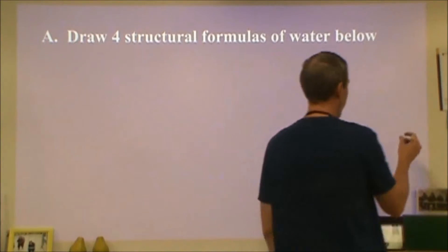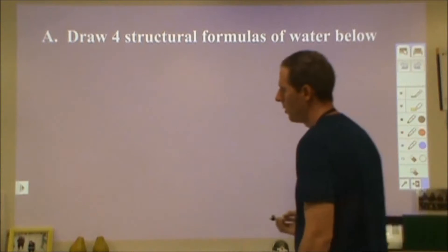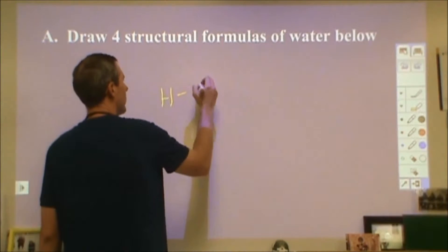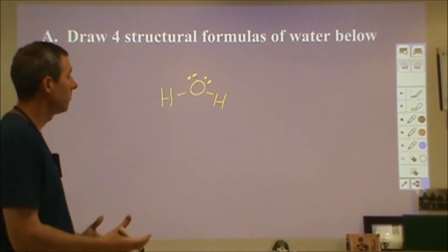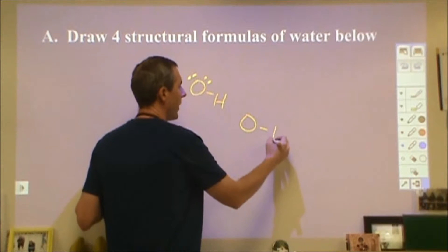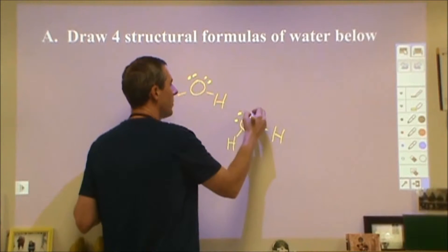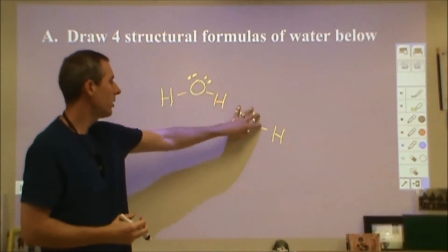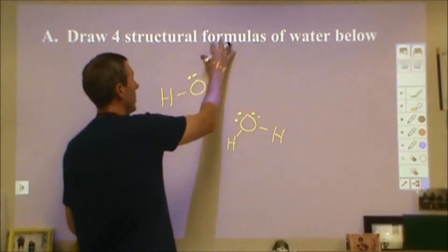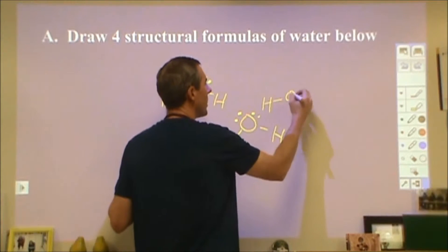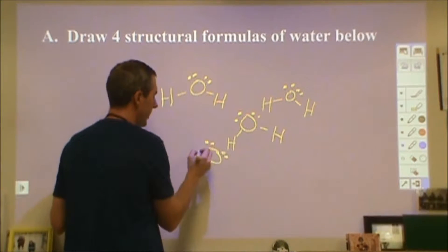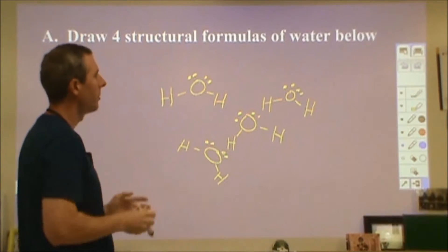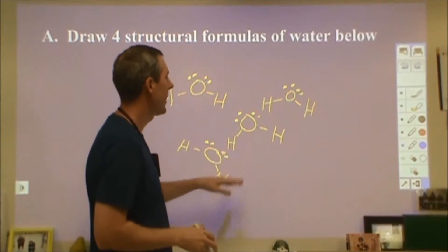In the beginning it says to draw four structural formulas of water below. Obviously water has two hydrogens and the oxygen, and then the two pairs of electrons on the oxygen. But when you draw four of them, they probably want you to draw an interaction between the water molecules. We want to align the oxygens with the hydrogens so that you have the negative charged region attracting the positive charged region. Here are our four water molecules with structural formulas and interactions between the hydrogens and the oxygens.